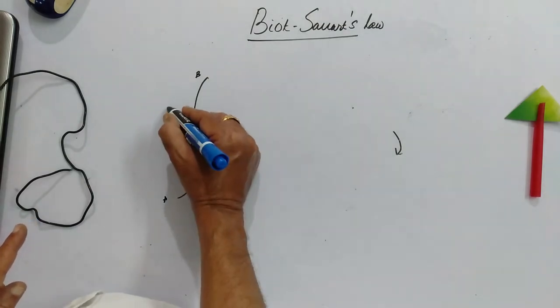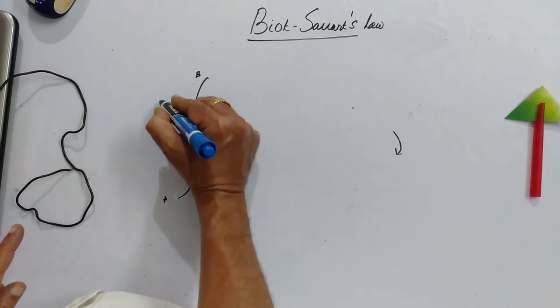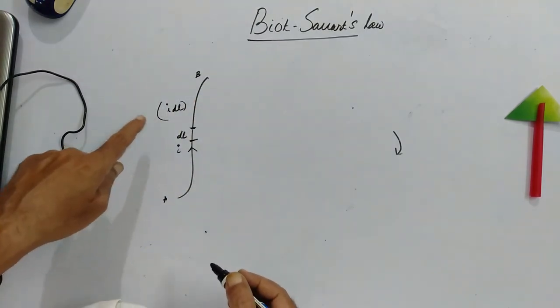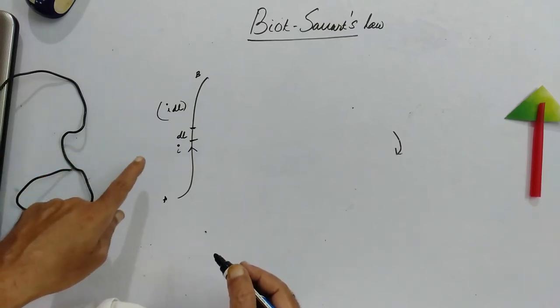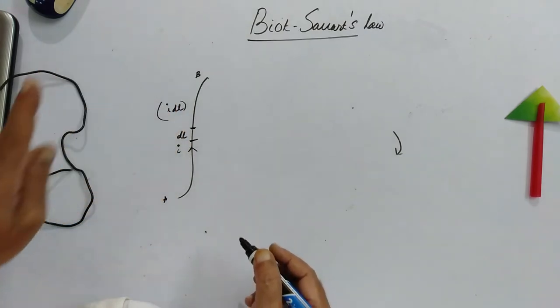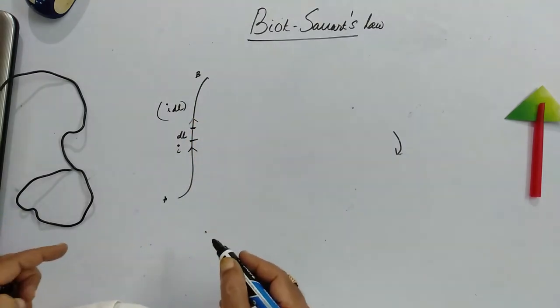Then I dL is called current element. Now this current element is a vector. What's the direction of this vector? The direction of the vector is the direction of the current. That means in this direction only it's there.